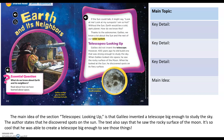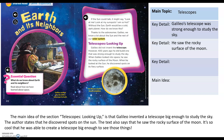Together yesterday we read 'Telescopes Looking Up.' We said the main topic was telescopes. We read that Galileo's telescope was strong enough to study the sky, that he saw the rocky surface of the moon, and that he discovered spots on the sun. We identified the main idea as: Galileo invented a telescope big enough to study the sky.